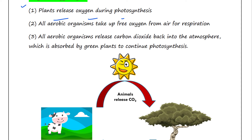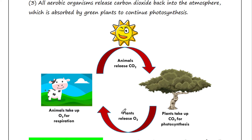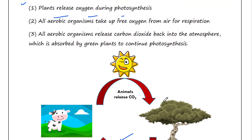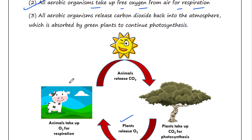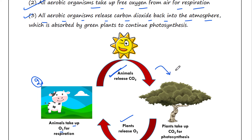Step 2 is that all aerobic organisms take up free oxygen from the air for their respiration. Step 3 is that all aerobic organisms release carbon dioxide back into the atmosphere, which is then absorbed by green plants to continue photosynthesis.